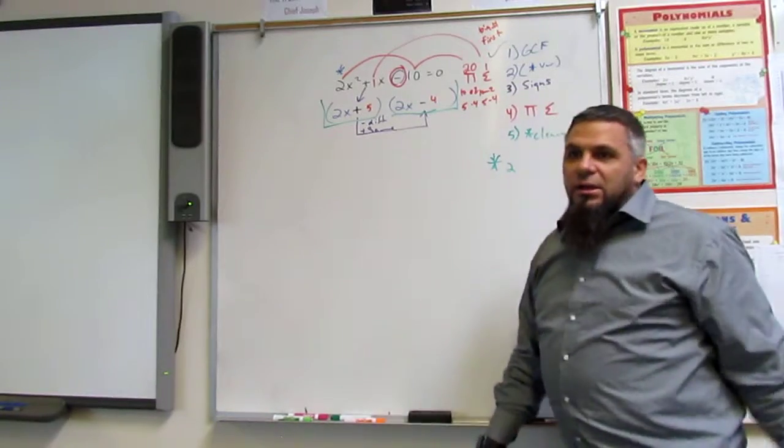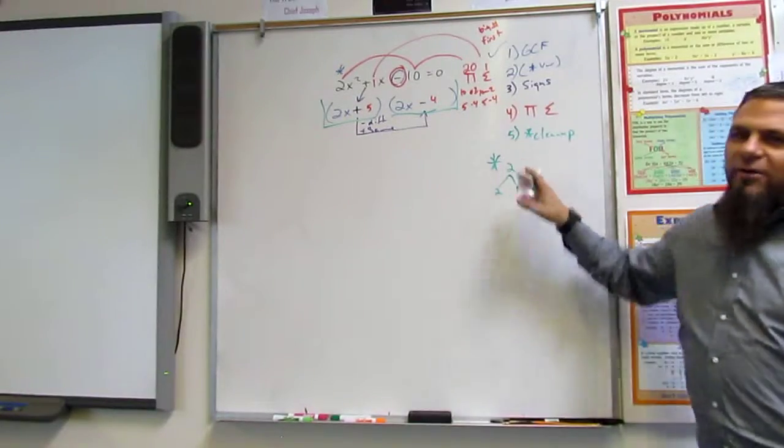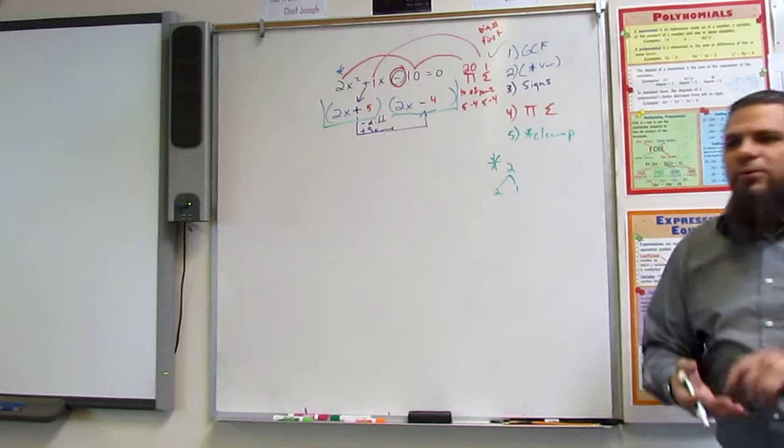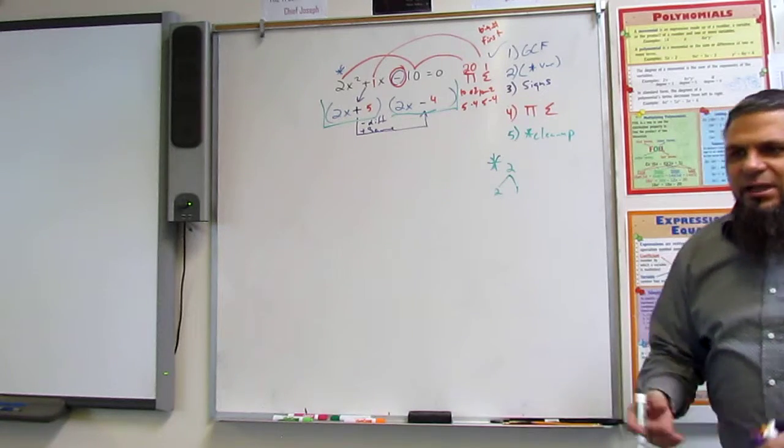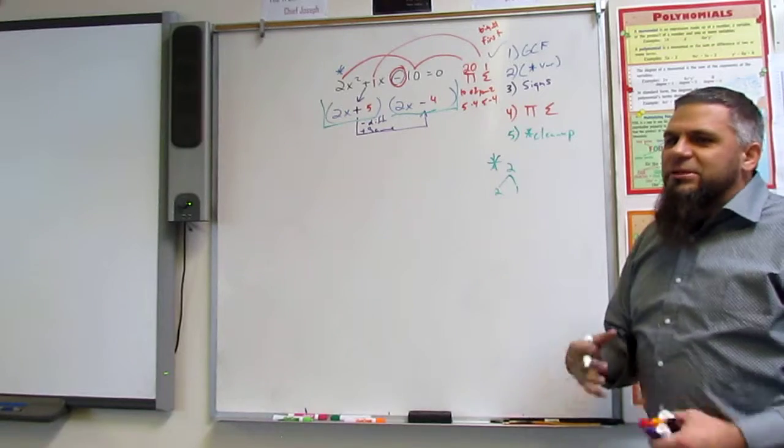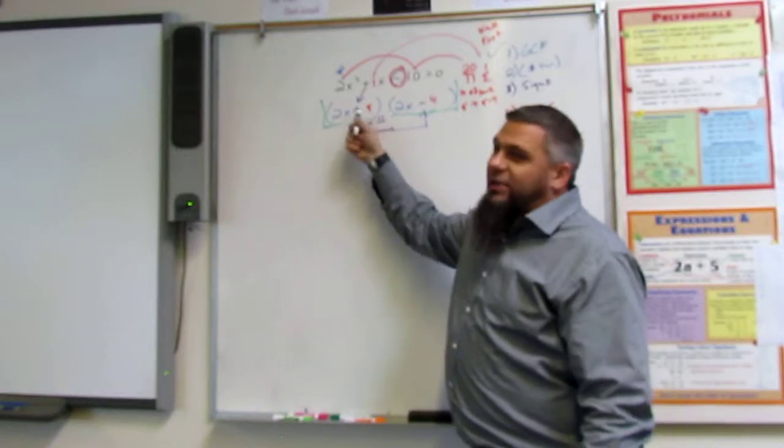And my star, what is my star? 2, right? So I need two numbers. 2 and 1. That's the only thing. Now, if it were 12, it could be 12 and 1. It could be 3 and 4. It could be 2 and 6. But it's not a 12. It's a 2. So the only two numbers that multiply to be 2 is 2 and 1. So does 2 go into both of these?